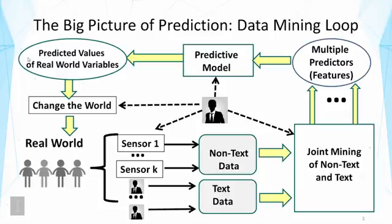In general, there is a loop from data acquisition to data analysis and mining, to prediction of values, to taking actions to change the world and observing what happens. We can then decide what additional data to collect by adjusting sensors or learning from prediction errors. This big picture is very general and reflects many important applications of big data.